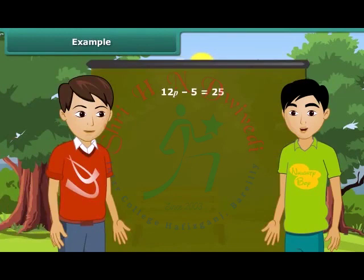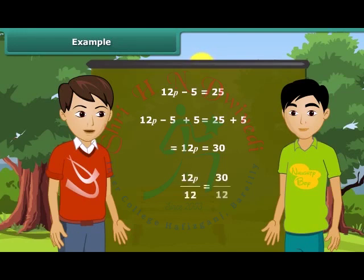Ajay, can you solve this equation? Yes. To get P on the left hand side, we will add 5 to both the sides. We get 12P is equal to 30. Now divide both sides by 12. We get the answer P as 5 upon 2. Very good. Do you know that we can solve these problems by transposing also?